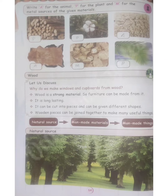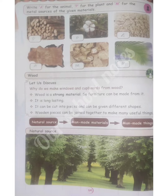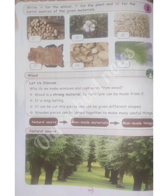Good morning students. Second Standard EVS Term 3. Unit 1: Material Around Us, page number 64. Write A for the animal, P for the plant, and M for the metal sources of the given materials.